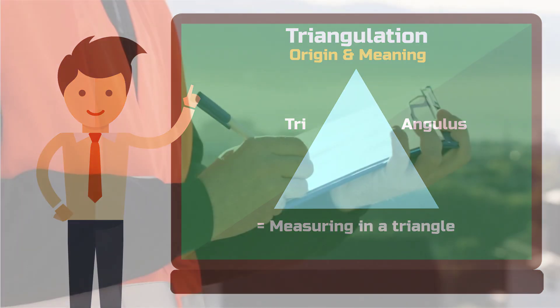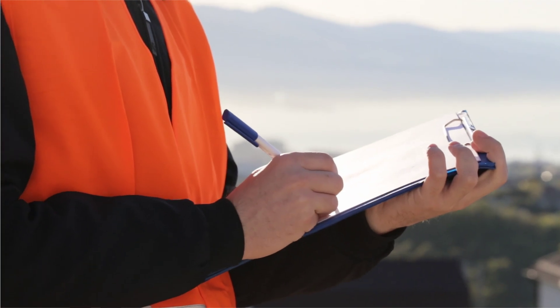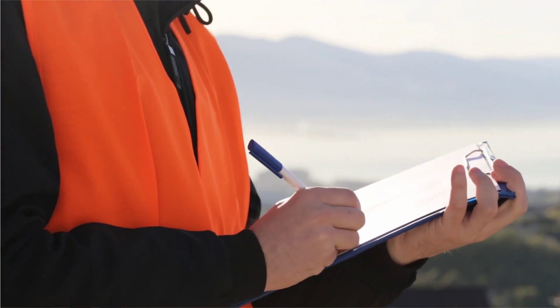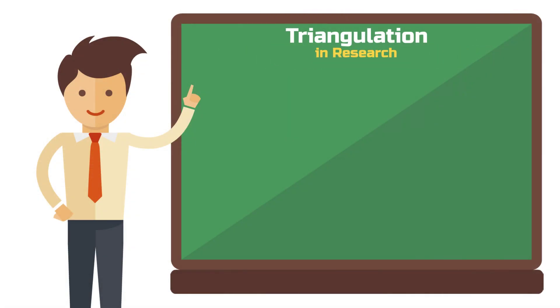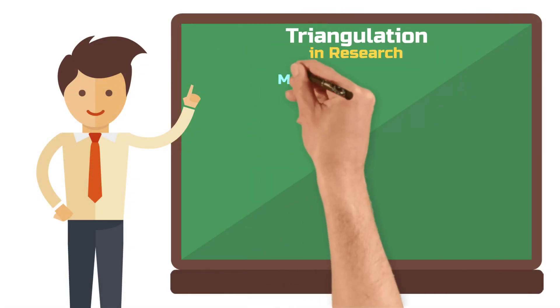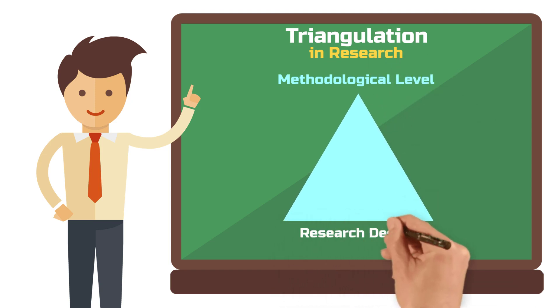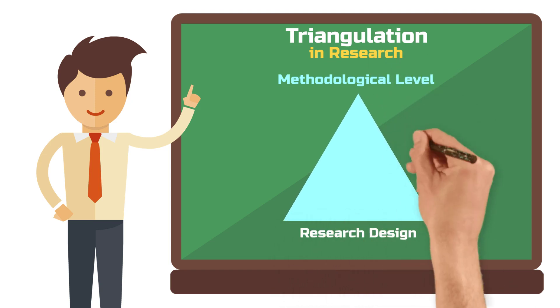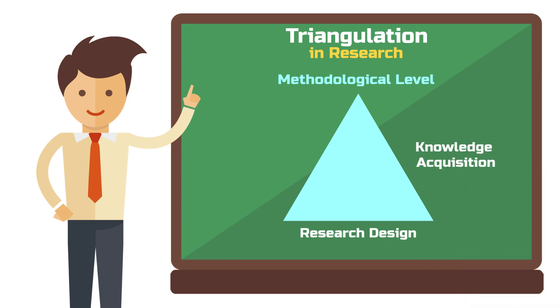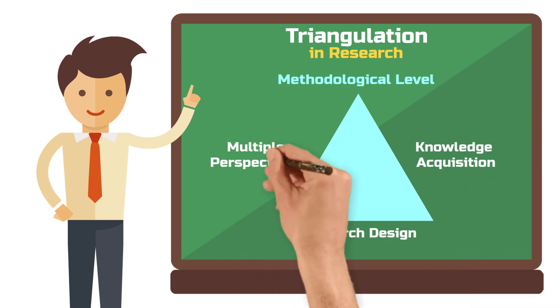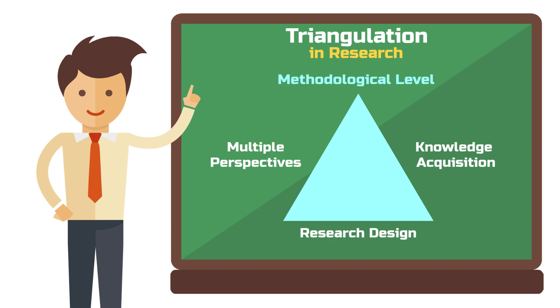So triangulation involves measuring in a triangle, a concept that originates from land surveying. However, outside of land measurement and geometry, empirical social research has adopted this term. When we talk about triangulation we are on a methodological level — it's about how a research design can provide as much insight as possible about a phenomenon using multiple perspectives.